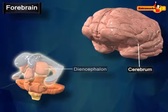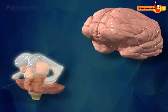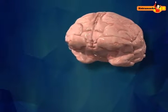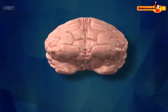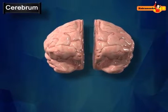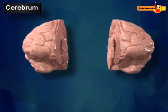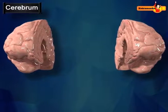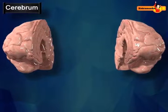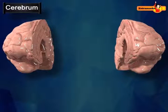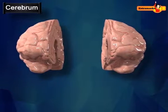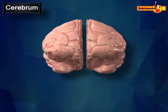The cerebrum is further divided into two halves called cerebral hemispheres. Each hemisphere is internally hollow, and their walls have two regions: the outer cortex, that is gray matter, and the inner white matter.